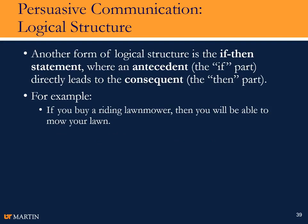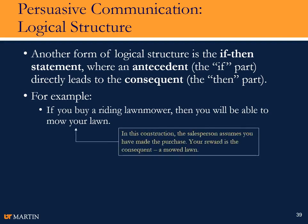Another way to do it is with an if-then statement, where you have an antecedent — the 'if' part — and the consequent — the 'then' part. 'If you buy a riding lawnmower, then you will be able to mow your lawn.' This construction assumes they've already made the purchase, and then they get the reward of a mowed lawn. This is better than saying 'if you want to mow your lawn, you could buy a riding lawnmower,' because that gives them a choice.